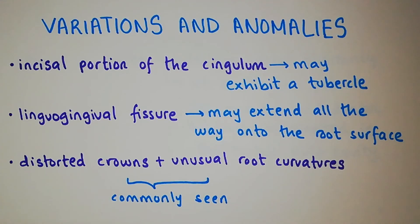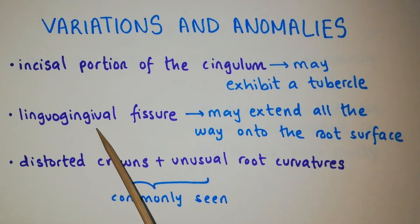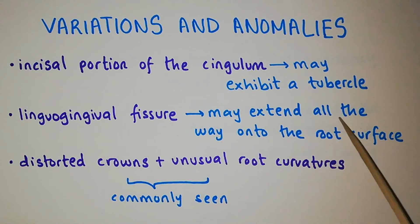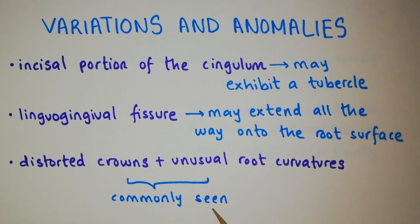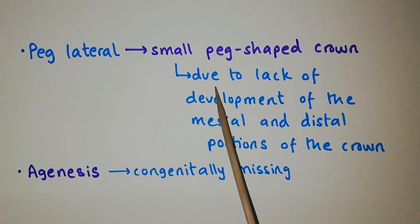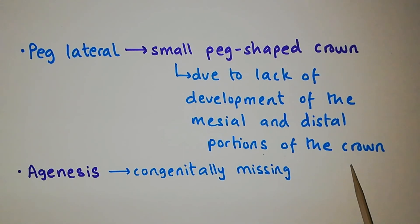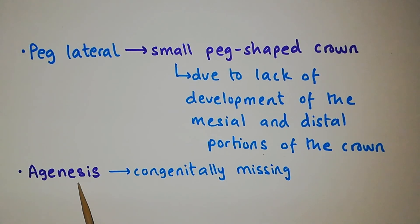Now let's come to the variations and anomalies. In the maxillary lateral incisors, the incisal portion of the cingulum may exhibit a tubercle. The lingual gingival fissure may extend all the way onto the root surface. Distorted crowns and unusual root curvatures are also commonly seen. Peg lateral is the anomalous condition in which the crown is small and peg-shaped, due to the lack of development of the mesial and distal portions of the crown. The maxillary lateral incisors may also be congenitally missing, which is called agenesis, because the tooth buds do not form.